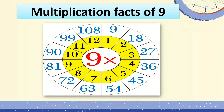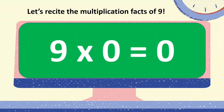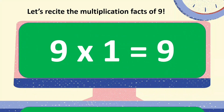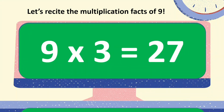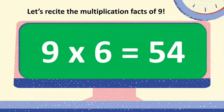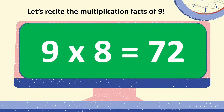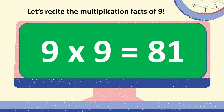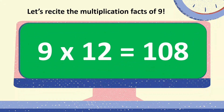Let's recite the multiplication facts of 9 together. 9 times 0 equals 0. 9 times 1 equals 9. 9 times 2 equals 18. 9 times 3 equals 27. 9 times 4 equals 36. 9 times 5 equals 45. 9 times 6 equals 54. 9 times 7 equals 63. 9 times 8 equals 72. 9 times 9 equals 81. 9 times 10 equals 90. 9 times 11 equals 99. And 9 times 12 equals 108.